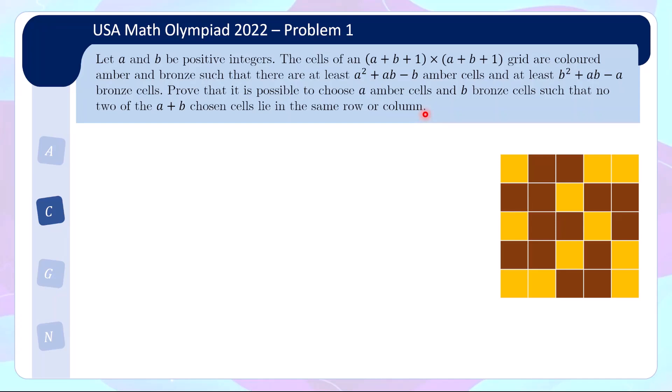Instead of choosing A+B cells, which is a little unusual for an (A+B+1)-sided grid, I'm going to choose A+B+1 cells with no duplicate row or column. Then if there are A+1 or A amber cells among them, we are done — if there are A+1 amber cells, just throw away one amber cell; if there are exactly A, throw away one bronze cell.